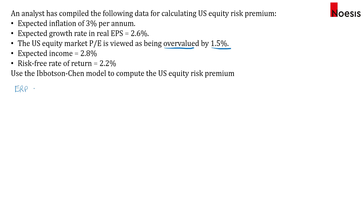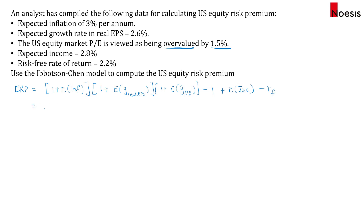The equity risk premium using the Ibbotson-Chen model is based on: 1 plus the expected inflation, multiplied by 1 plus the expected growth in real EPS, multiplied by 1 plus the expected growth in the PE ratio, then minus 1, plus the expected income for the index, minus the risk-free rate. The inflation rate given is 3%, so that's 1 plus 0.03. The growth in real EPS is 2.6%. The key here is that the US equity market PE ratio is viewed as overvalued, so we expect the PE ratio to contract by 1.5%, making this 1 minus 0.015, because we expect the PE ratio to decline. Then we minus 1.